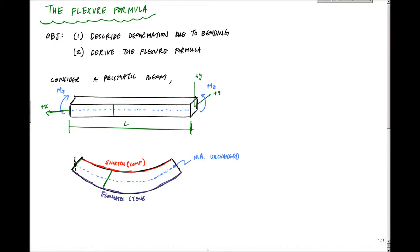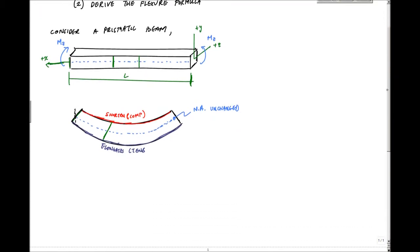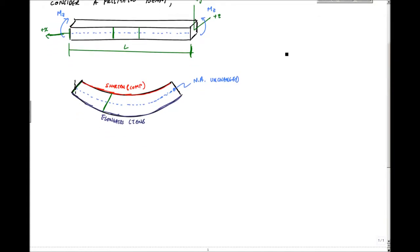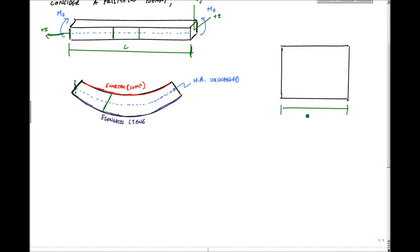Let's zoom in on an element — consider a segment of this beam before deformation. I'll just take a cut out and draw it in 2D. This segment has length delta X that I just cut out, and here is my neutral axis line.